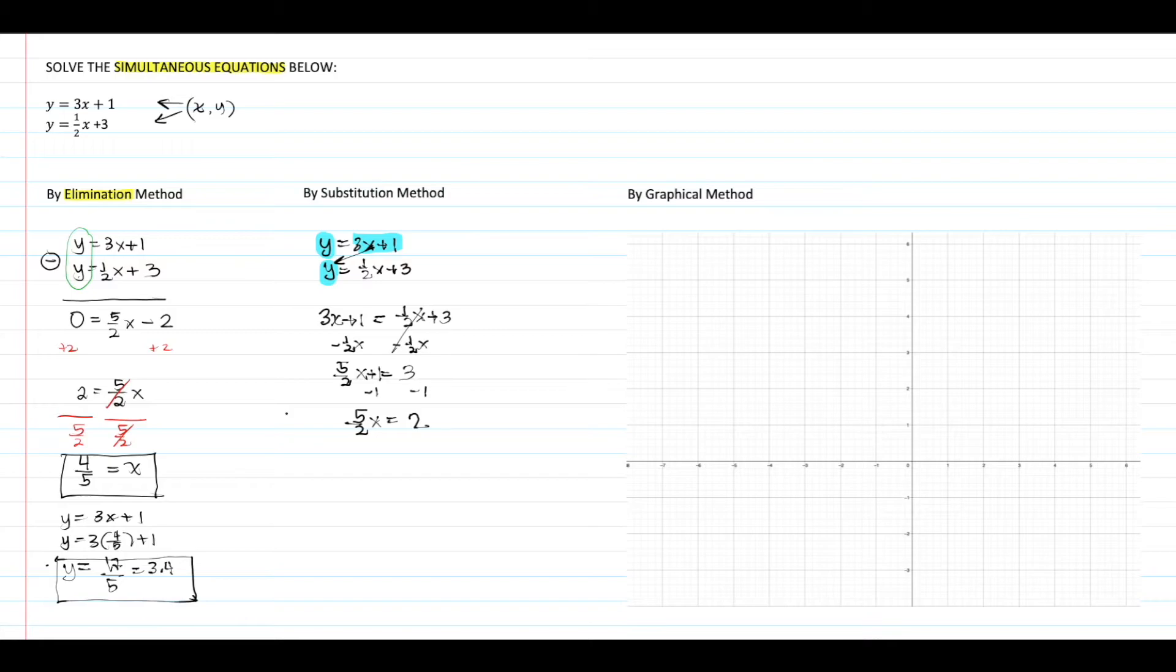You can see in the result that this expression is the same expression we had when we used the elimination method. In the same way, we divide both sides by 5/2, giving us the value of x which is 4/5 or 0.8.